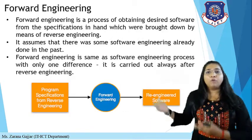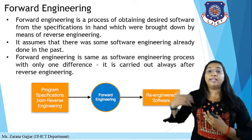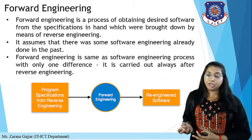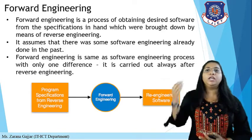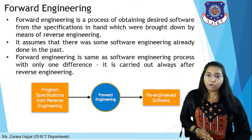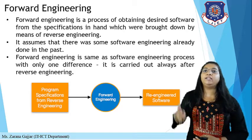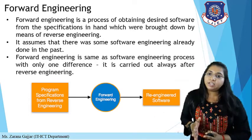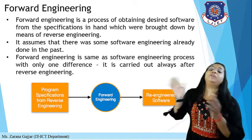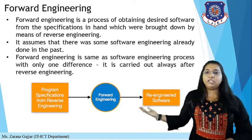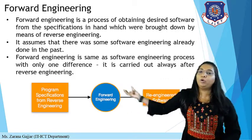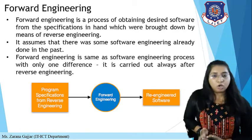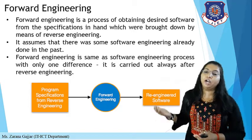Forward engineering is a process of obtaining desired software from the specification in hand, which was brought down by means of reverse engineering. The output of reverse engineering becomes the input for forward engineering. Forward engineering is the same as the software engineering process, with one difference: it is always carried out after reverse engineering. The program specification from reverse engineering becomes input for forward engineering, and then you achieve a re-engineered software.